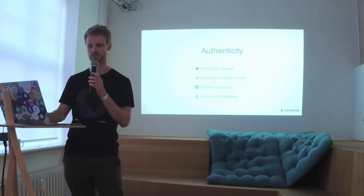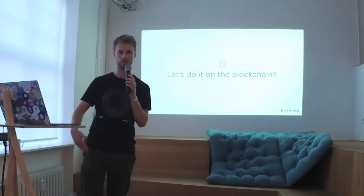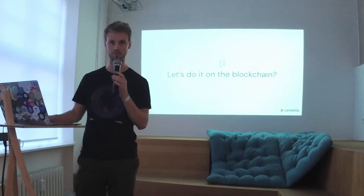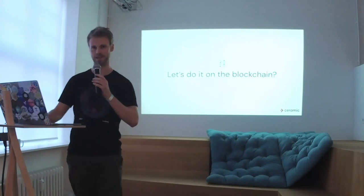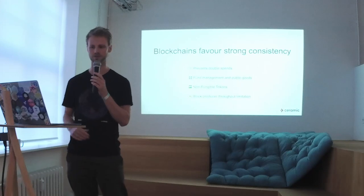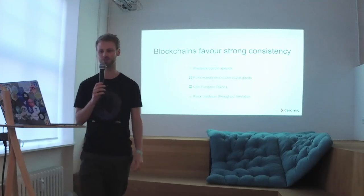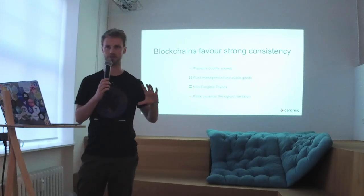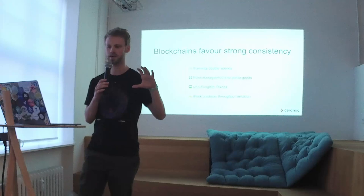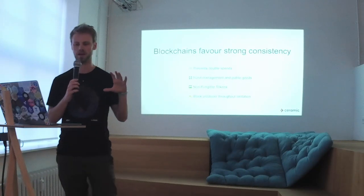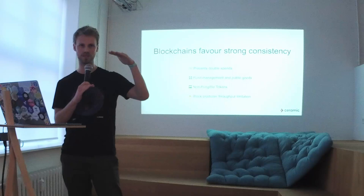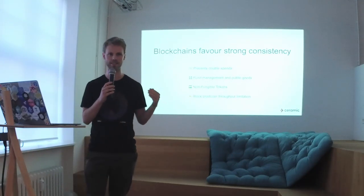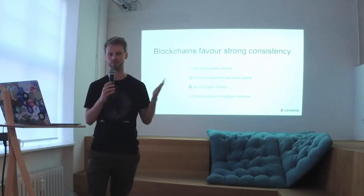So how can we build this system? Can we just put it on the blockchain? The blockchain kind of provides all of this functionality. Well, the problem with blockchain systems is they don't scale very well. The reason is that they favor something called strong consistency. Essentially that means all transactions need to be ordered in a particular way — all transactions need to be completely ordered, and you can't have two nodes with different ideas of what the state of the blockchain is.